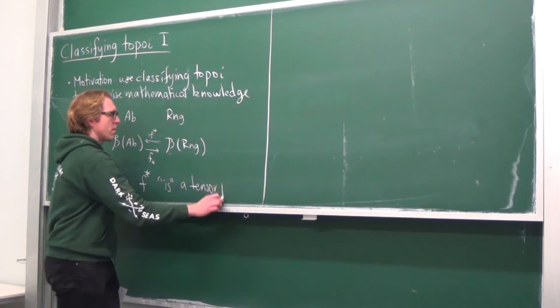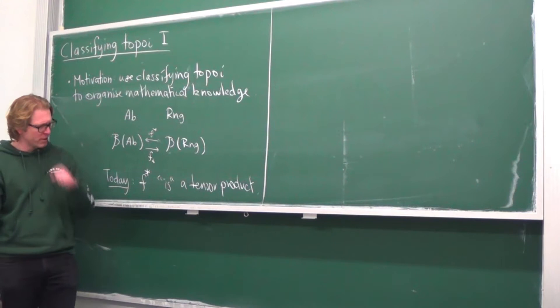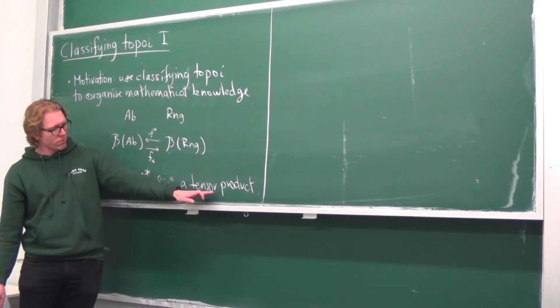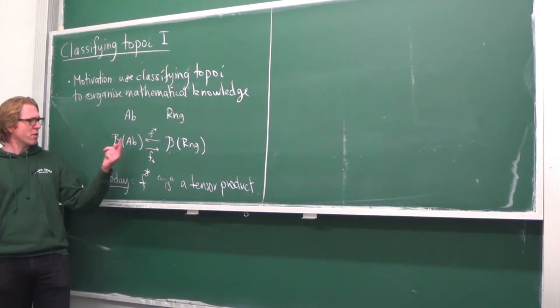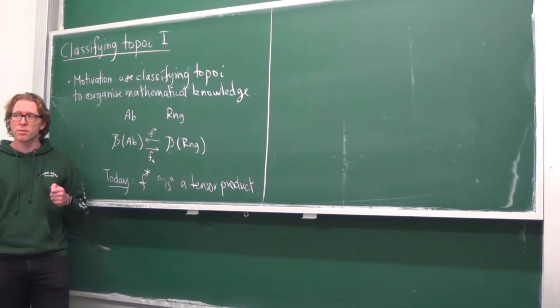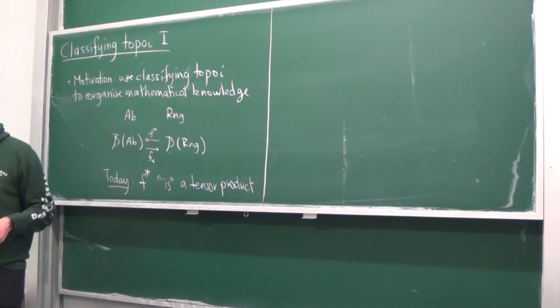The way to think about the left adjoint is as a tensor product. We all know what this means in the setting of algebra, and today we're going to upgrade this intuition into a way to think about more general left adjoints, such that a lot of the conceptual framework around tensor products does translate. For example, geometric realization of a simplicial set is a tensor product, and logical objects like the universal ring and the universal abelian group are very much like a tensor product. The intuitions from the logical context, the algebra context, and the algebraic topology context — geometric realization — share a common core.